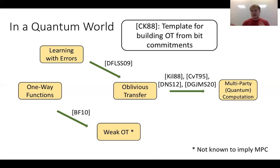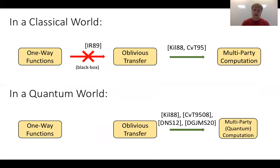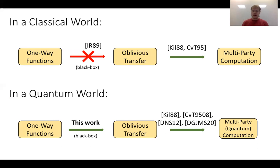This weak indistinguishability-based OT is not known to imply full-fledged MPC. So there's still a gap. Prior to our work, it was not known whether one-way functions were sufficient for full-fledged MPC. In the classical world we have a black-box separation between OT and one-way functions. In a quantum world, the relationship is less clear. Our work shows that simulation-secure OT sufficient for MPC can be built even from just black-box usage of one-way functions — in a quantum world using quantum communication — establishing that you can build full-fledged MPC from one-way functions quantumly.